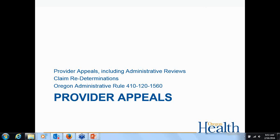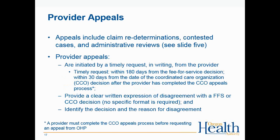Provider appeals — including administrative reviews and claim redeterminations — are found in OAR 410-120-1560. Appeals include claim redeterminations, contested cases, and administrative reviews. Provider appeals are initiated by a timely written request from the provider — timely means within 180 days from the fee-for-service decision, or within 30 days from the date of the CCO decision after completing the CCO appeals process. The request must be a clear written expression of disagreement with the decision, identifying the decision and the reason for your disagreement.